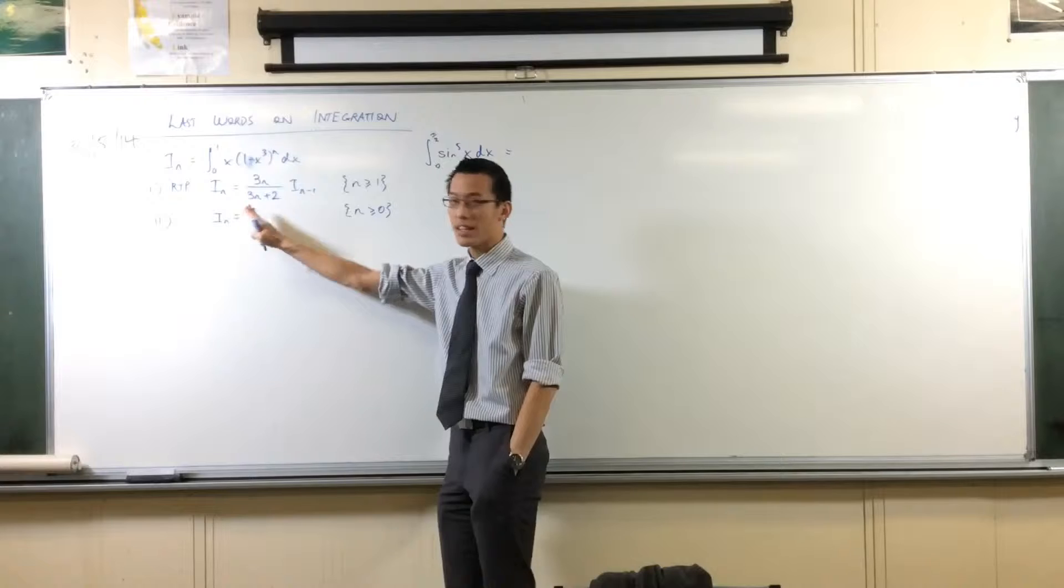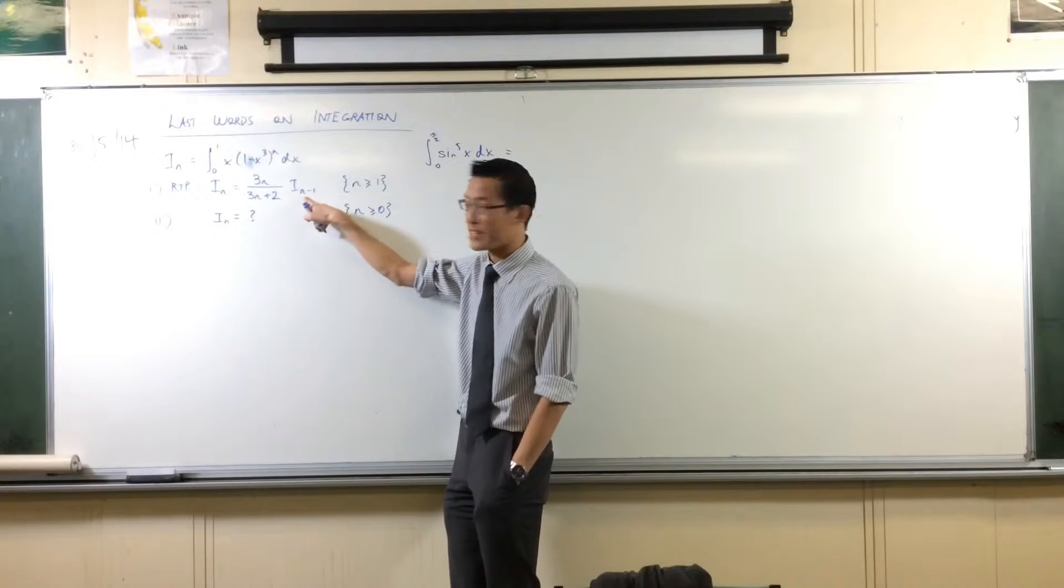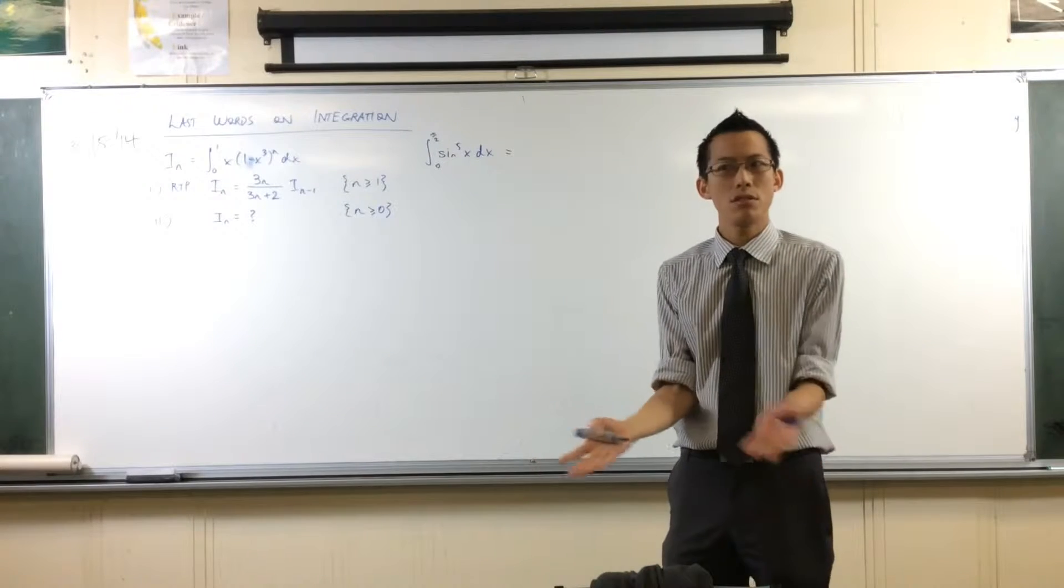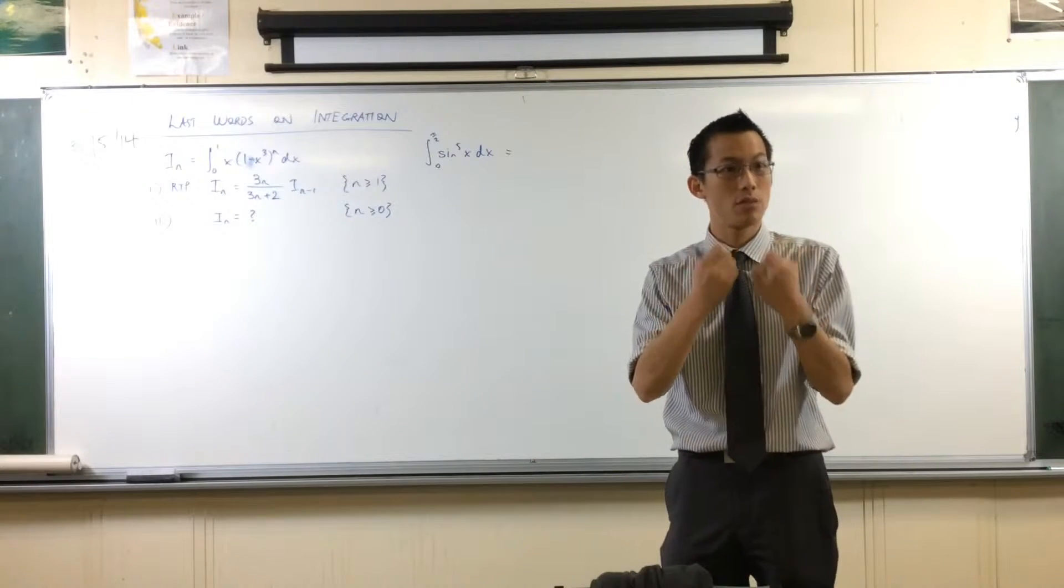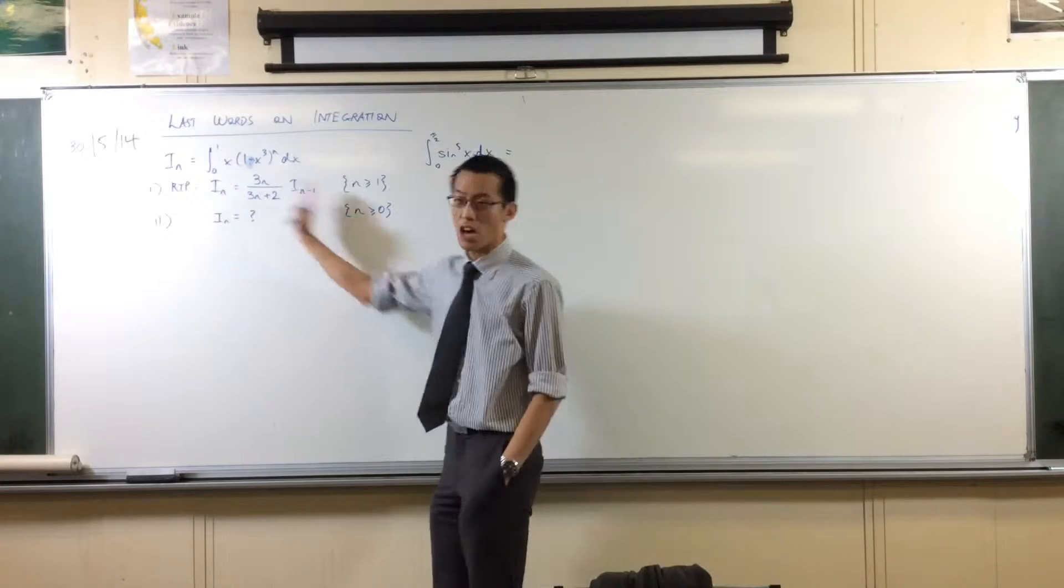So the idea here is, we're going to take the same principle. We want to go all the way using this identity until we get down to something where we don't need to use the recurrence relation anymore, and we can just say what it is.